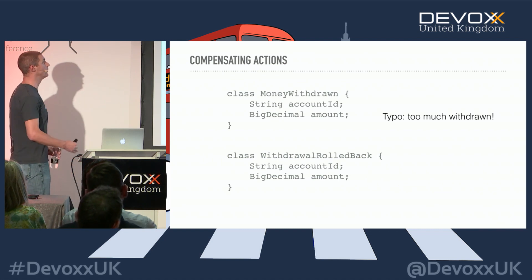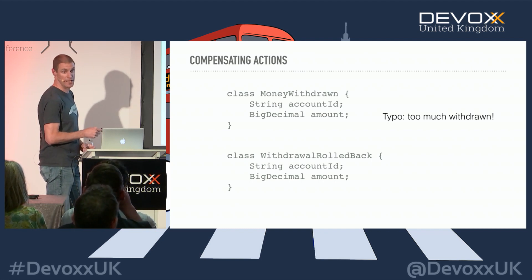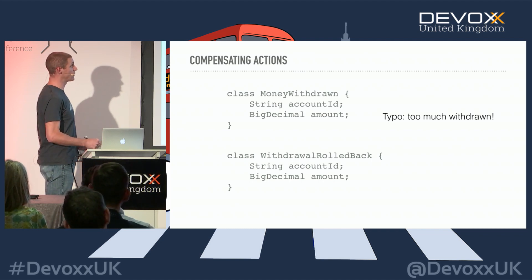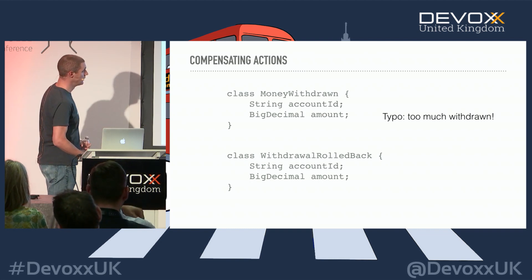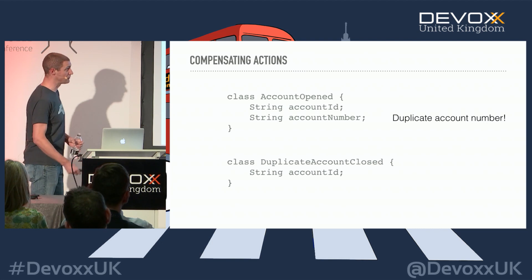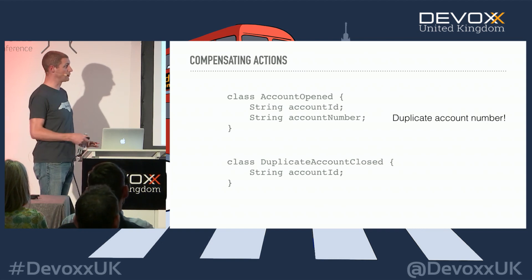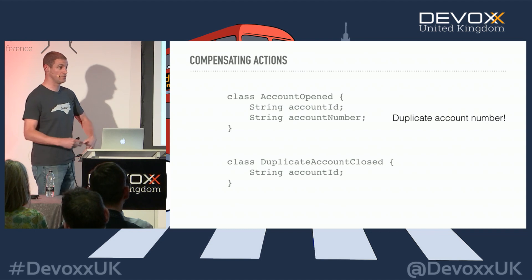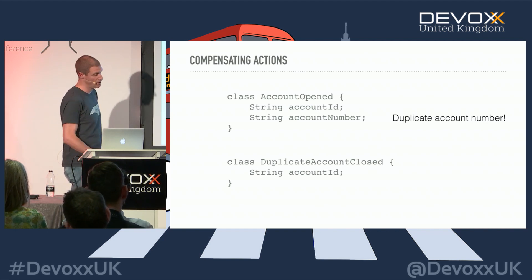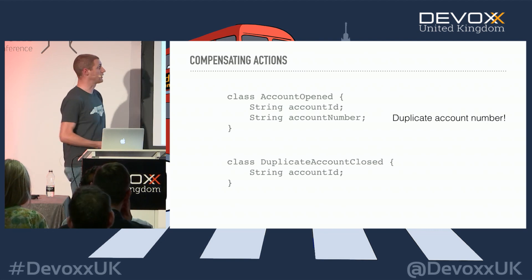Turning that around to events: if a money withdrawn event had a typo in the amount, we may want to roll that back or correct it. If an account was opened but the account number turns out to be a duplicate, rather than deleting everything and pretending it never happened, we apply a correcting event that other systems can react to — for example, 'this account turned out to be a duplicate and we now closed it.'